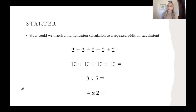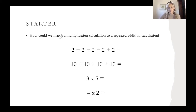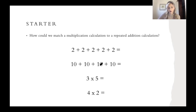So how could we match a multiplication calculation to a repeated addition calculation? I wonder if we could have a go at matching them both up. I'm going to do this first one here. I can see that this is a repeated addition calculation because I can see that I'm adding the same number over and over again. Once I've done this, then you can have a go at writing the multiplication calculation for this question, and then the repeated addition for these two questions.